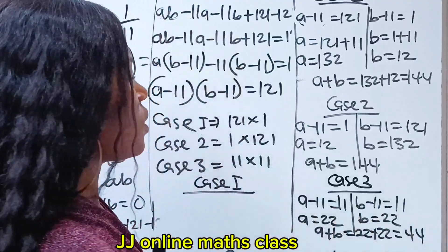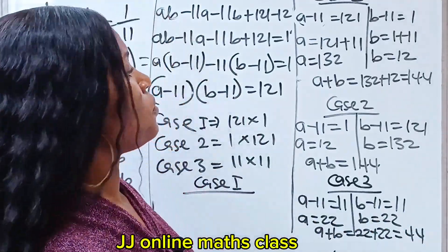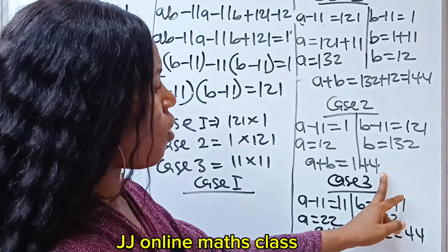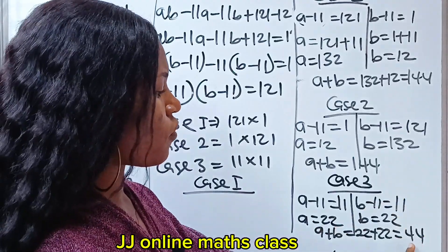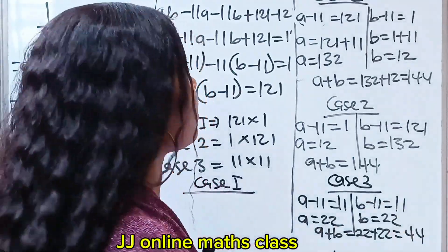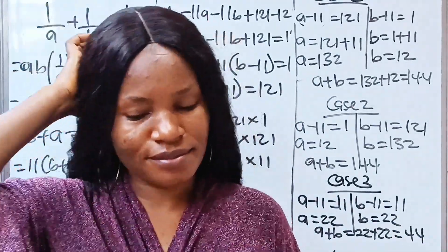So these are the values of A plus B: 144 and 44. Thank you so much for watching. Have a lovely day. Bye!